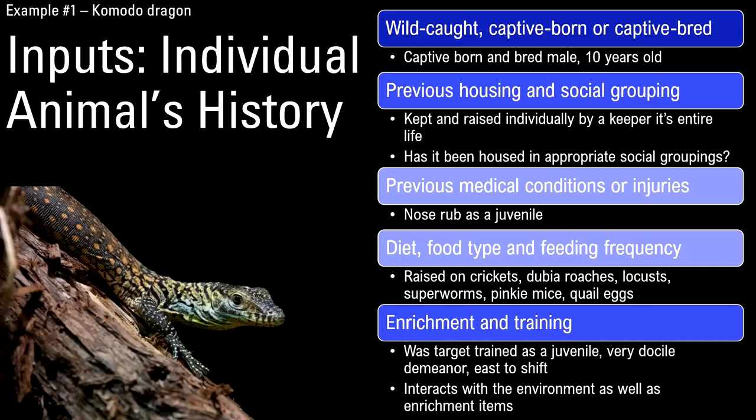At the point of this assessment, the animal is 10 years old and has been in its enclosure for a number of years. This is not a situation assessed to determine an incoming animal's health and welfare. Previous medical conditions for this individual include nose rub as a juvenile. The diet is pretty complex, and there's information on training and enrichment. This is just banking the inputs — what you know about the animal.